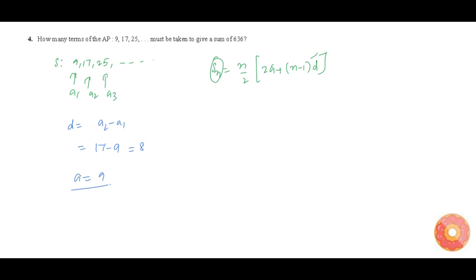Sn is equal to 636 equals n by 2 into 2 into a is 9 plus n minus 1 into d is 8 which is now 636 is equal to n by 2 into 18 plus 8n minus 8.